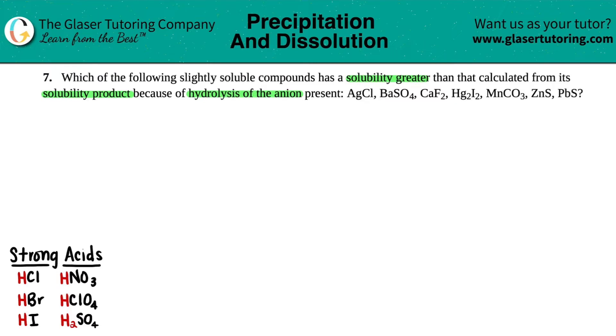They all have a solubility product. Solubility product—remember, Ksp—the S and P in Ksp is solubility product. So that just means that all of these seven compounds will exist majoritively as the solid.